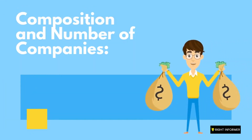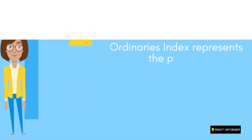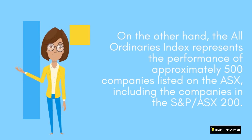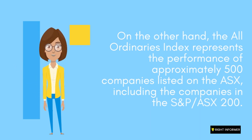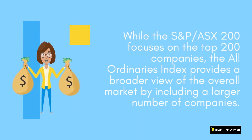Composition and number of companies: The S&P/ASX 200 is an index that represents the performance of the top 200 companies listed on the Australian Securities Exchange (ASX), based on their market capitalization. On the other hand, the All Ordinaries Index represents the performance of approximately 500 companies listed on the ASX, including the companies in the S&P/ASX 200. While the S&P/ASX 200 focuses on the top 200 companies, the All Ordinaries Index provides a broader view of the overall market by including a larger number of companies.